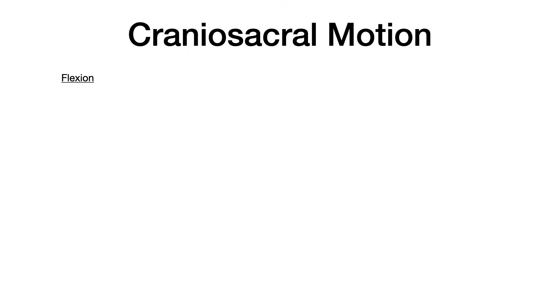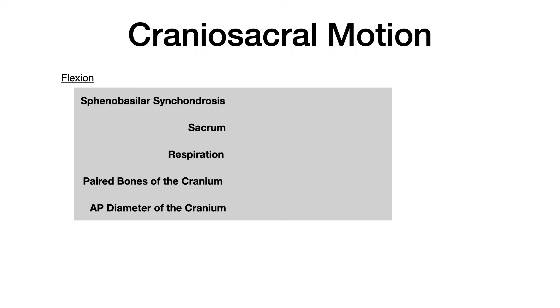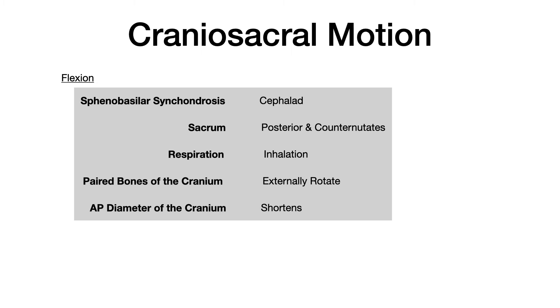Craniosacral motion can be normal or abnormal. When talking about normal physiologic motions, we start with flexion and extension. In craniosacral flexion and extension, many things are moving simultaneously. You need to memorize what's happening at the sphenobasilar synchondrosis (SBS), what's happening at the sacrum, what's happening at respiration, what the paired bones of the cranium are doing, and what the AP diameter of the cranium is doing. In craniosacral flexion, the SBS moves cephalad, the sacrum moves posterior and is said to counter-nutate, this occurs during inhalation, the paired bones externally rotate, and the AP diameter of the cranium shortens.